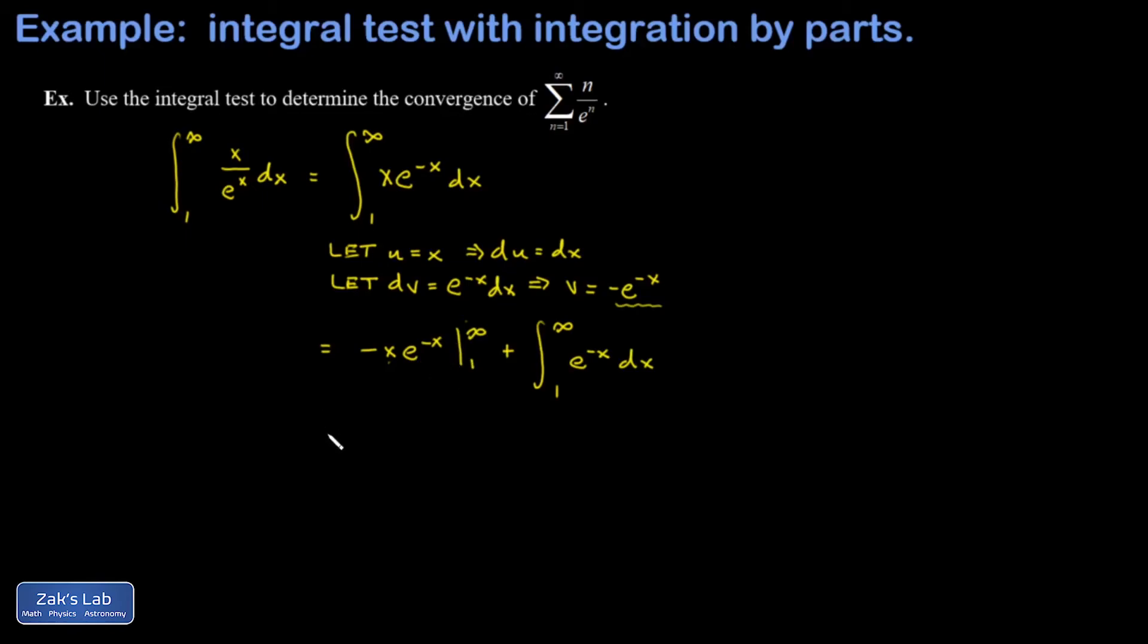We can rewrite this as a limit when I plug in this upper limit of integration. The lower limit is unambiguous and I'm subtracting that, so I end up with a positive term. Replace x with one and I get e to the negative one.